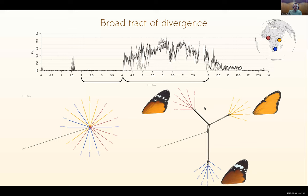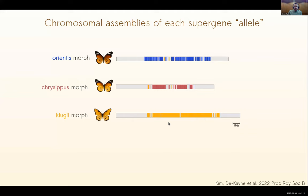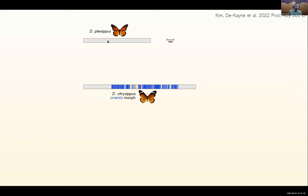Zooming in on those FST plots for chromosome 15, it's a very defined region of differentiation. Outside of this region, a phylogenetic network shows no differentiation within this species. Within this region, we see very clear clustering into three groups, each with different warning patterns. We were able to make chromosome-level genome assemblies for each of the three groups. This is what chromosome 15 looks like in each group - the colored part shows the part of the chromosome most different between them, and the first thing you'll notice is that this chromosome has a different length in each morph.